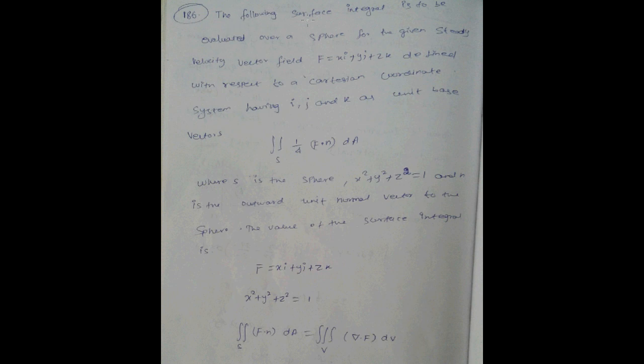The following surface integral is to be evaluated over the sphere for the given steady velocity vector f equal to xi plus yj plus zk, defined with respect to a Cartesian coordinate system having ijk as unit base vectors.